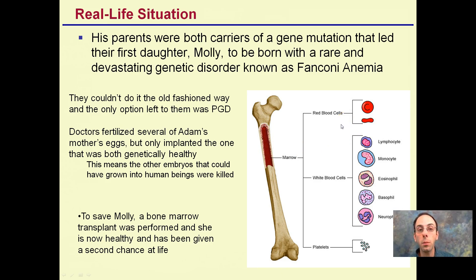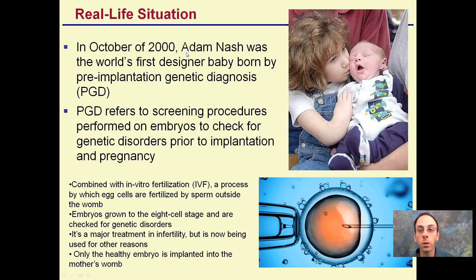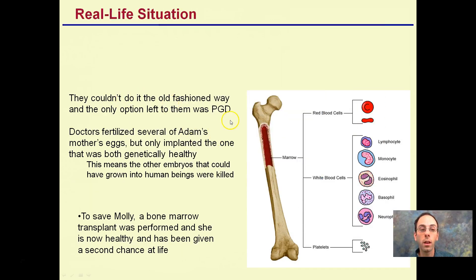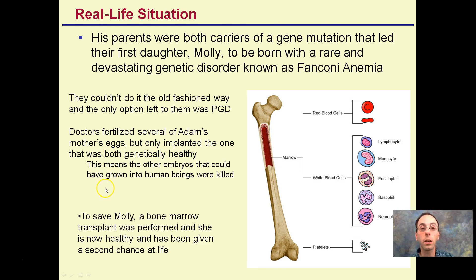But the designer baby, Adam, through the process of genetic engineering, did not have to go through that process. Simply having the genes modified avoided the entire anemia from occurring in the first place. Doctors fertilized several of the mother's eggs, but only implanted one that was genetically healthy — selecting for the one that did not carry those genetic disorders.